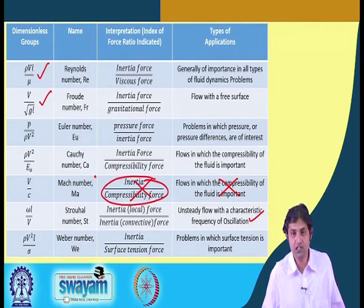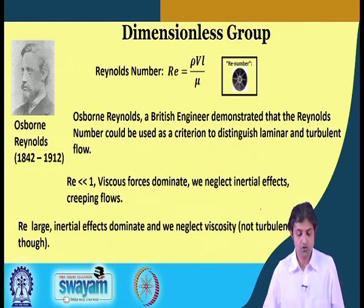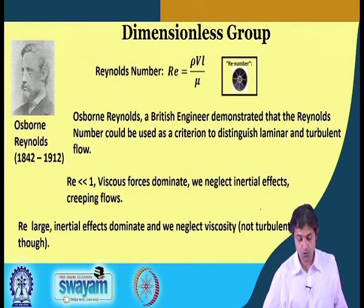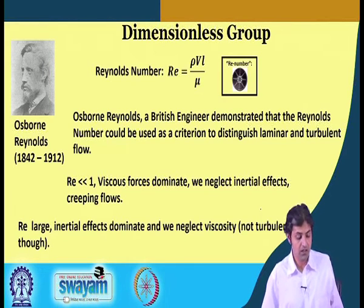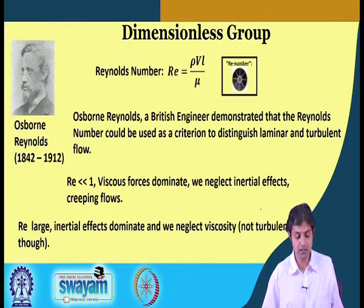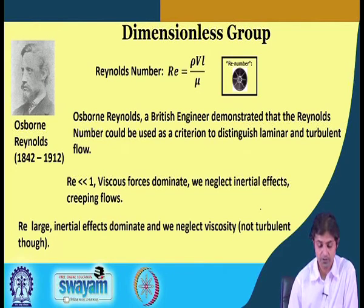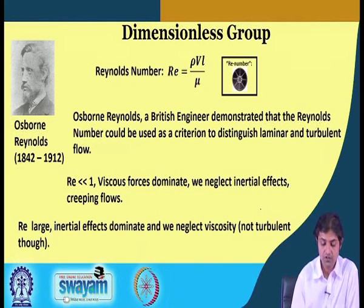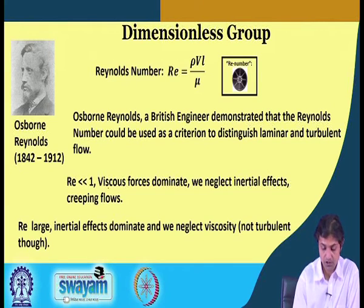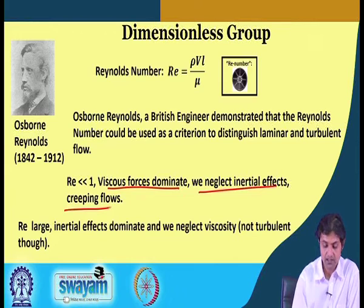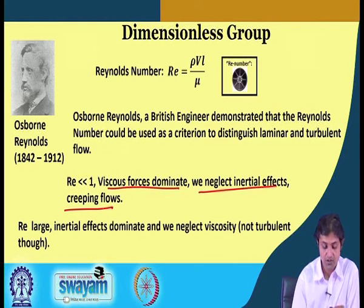I will go into a little more detail on some important numbers. Reynolds number rho-VL divided by mu was given by Osborne Reynolds, a British engineer who demonstrated that Reynolds number can be used as a criterion to distinguish laminar and turbulent flow. If Reynolds number is much less than 1, viscous forces dominate and we neglect inertial effects — this is called creeping flow, as in Stokes' derivation. If Reynolds number is large, inertial effects dominate and we neglect viscosity.